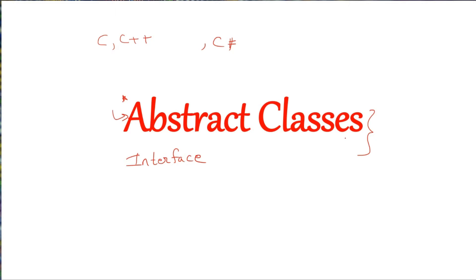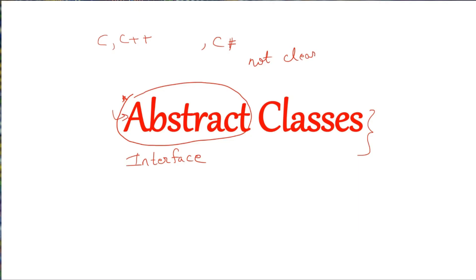Before we start abstract class, let's take 30 seconds to understand the keyword 'abstract' itself. When I say abstract, it is not about abstraction. Abstract is something which is vague. When we say some idea or some concept is vague, or you are looking at some picture and you say it is a vague picture, that means it is not clear — it is not giving you any clear-cut idea.